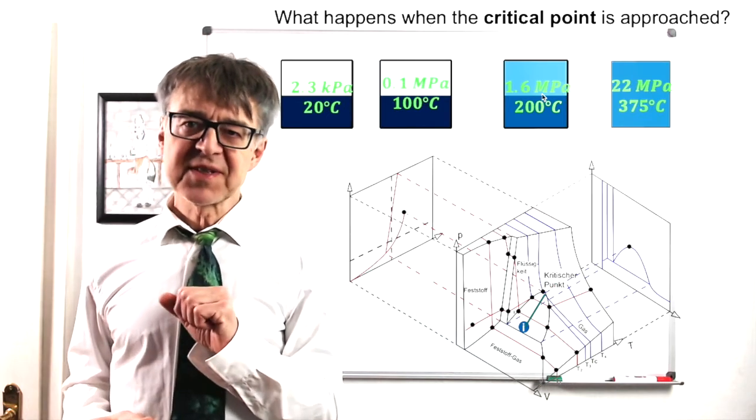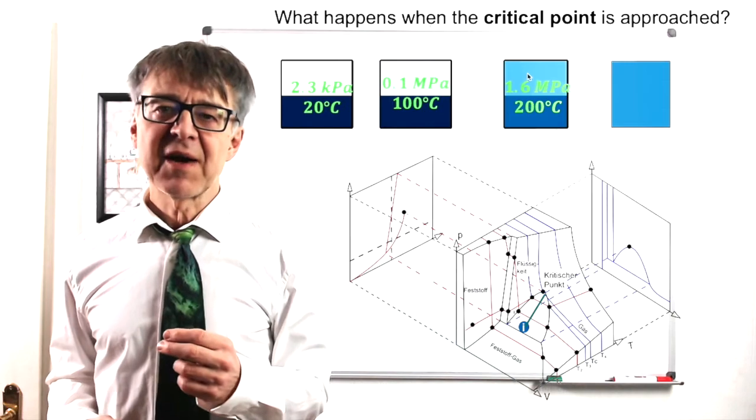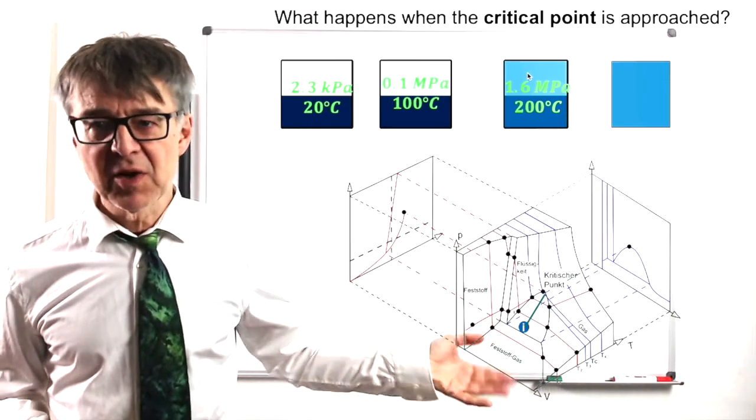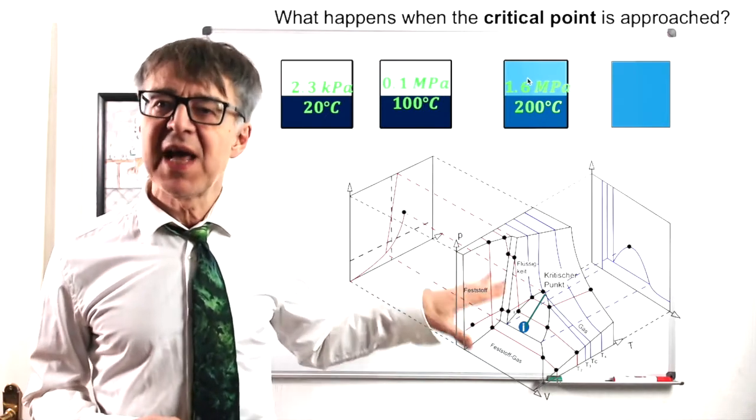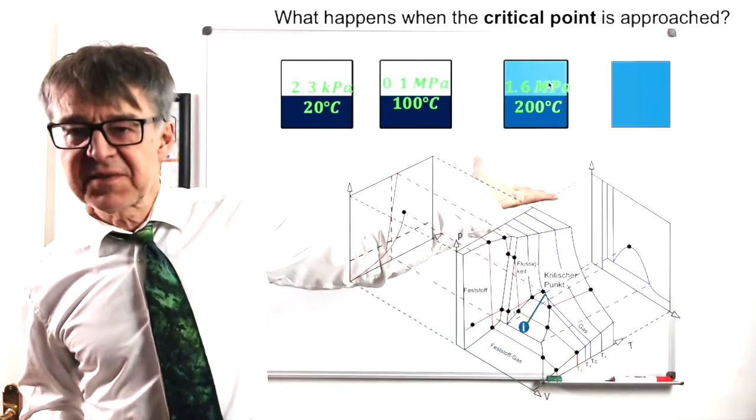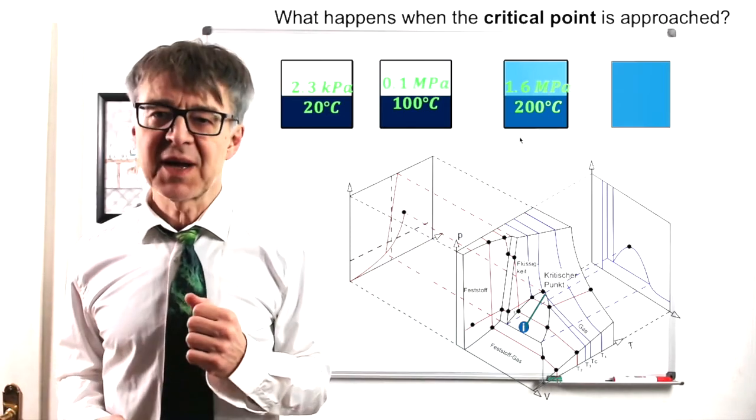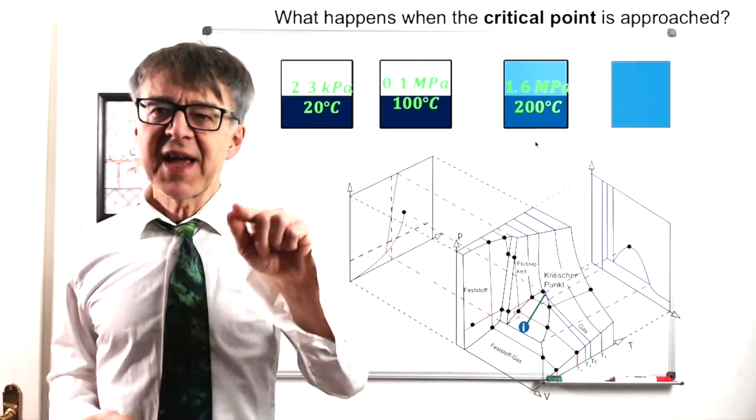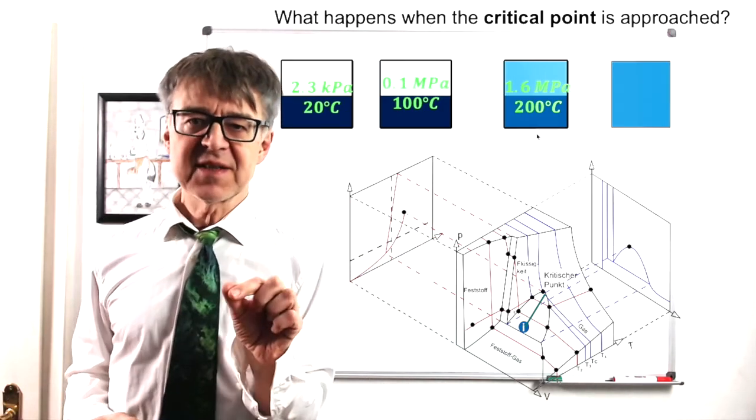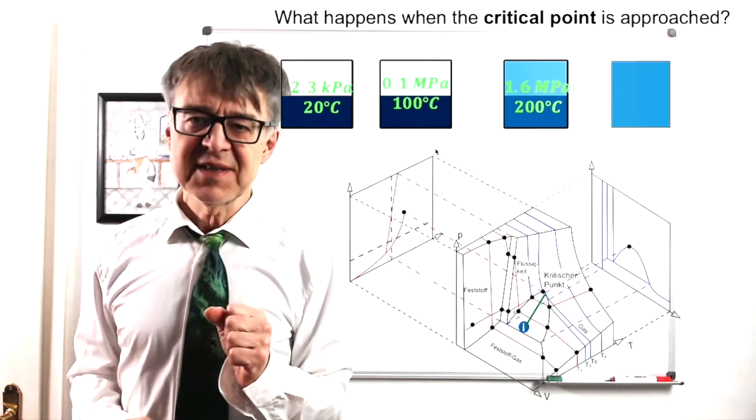We continue to heat the system to 200 degrees Celsius. What do we have now? A liquid phase below, a gaseous phase above. However, now the liquid phase has become less dense and the gaseous phase more dense. The pressure is 1.6 MPa now. With increasing temperature, gaseous and liquid phases approximate in terms of density. And not only in terms of density, in terms of every property.